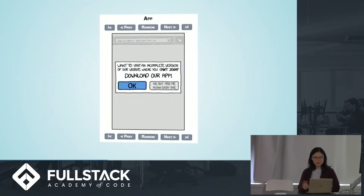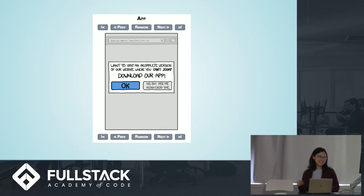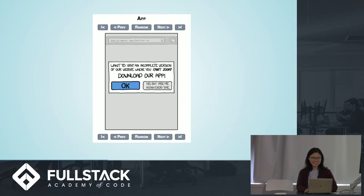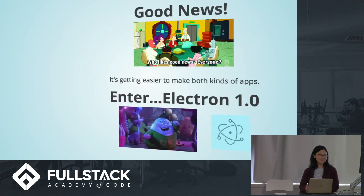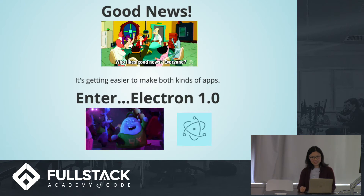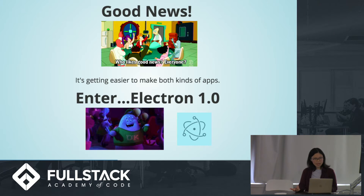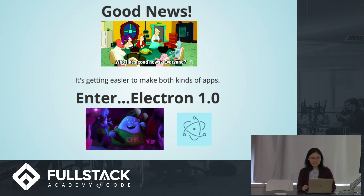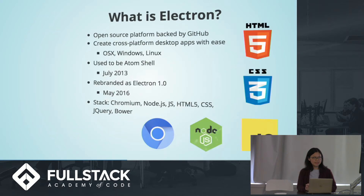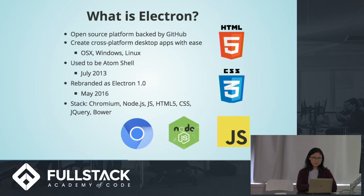You don't get that dock experience with web apps. And that's an XKCD comic about the cons of desktop apps — that you have to keep downloading stuff each time. But the good news is it's getting easier and easier to develop desktop apps, and Electron, which is an open source platform backed by GitHub, lets us create cross-platform desktop apps very easily.